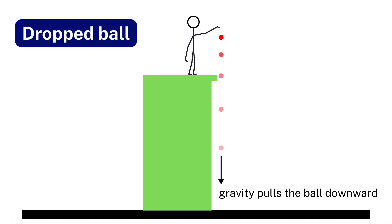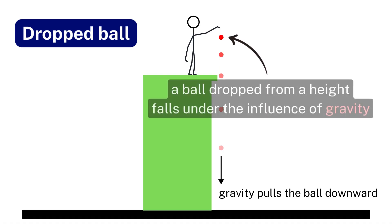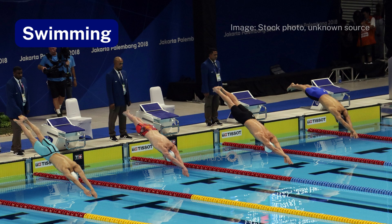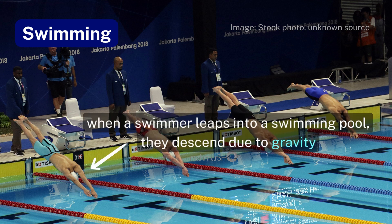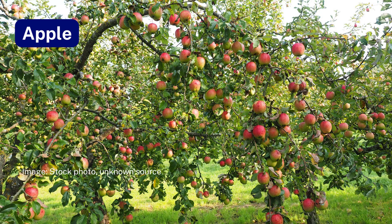Dropped ball — gravity accelerating a dropped ball from a height. Swimming — gravity attracting a swimmer as they leap into a swimming pool. Apple — gravity pulling an apple down from a tree.